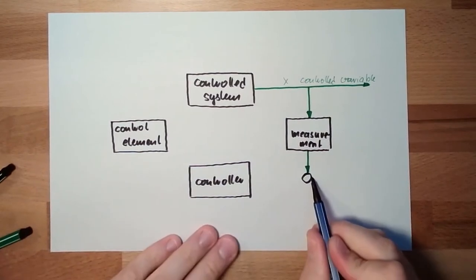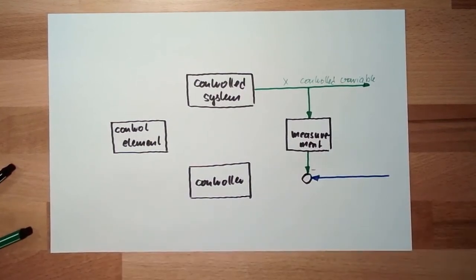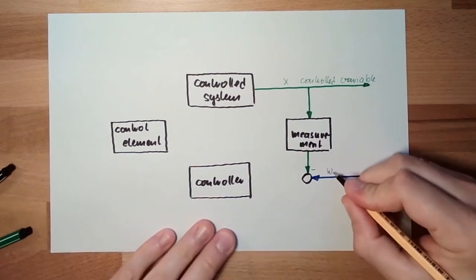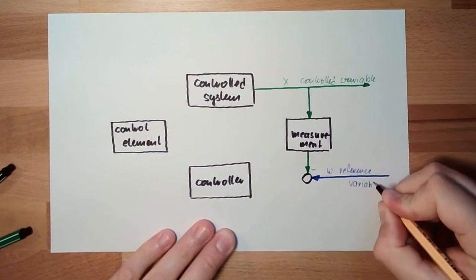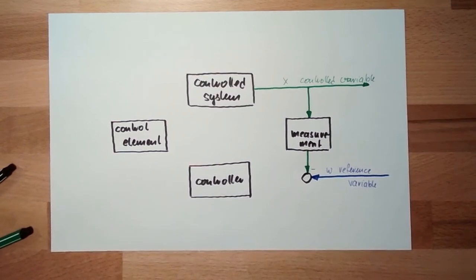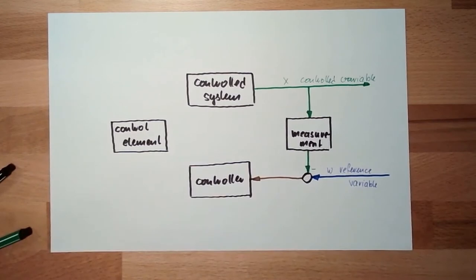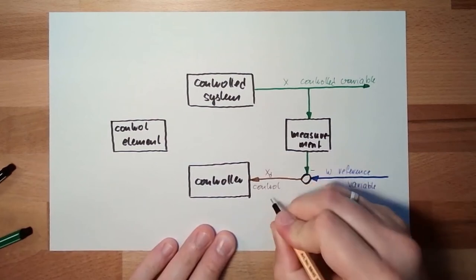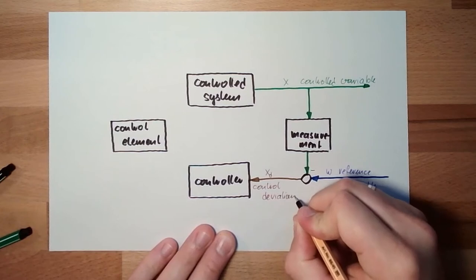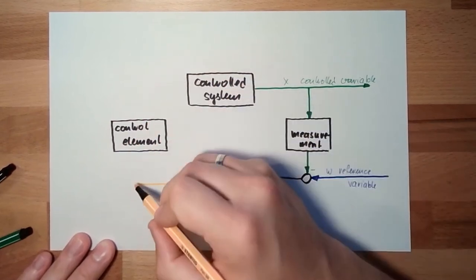This is compared to the reference variable, so there is a minus here. This is w, the reference variable. Out of this comparison there is the control deviation xd, which is handled by the controller. The control deviation is influencing the control element.